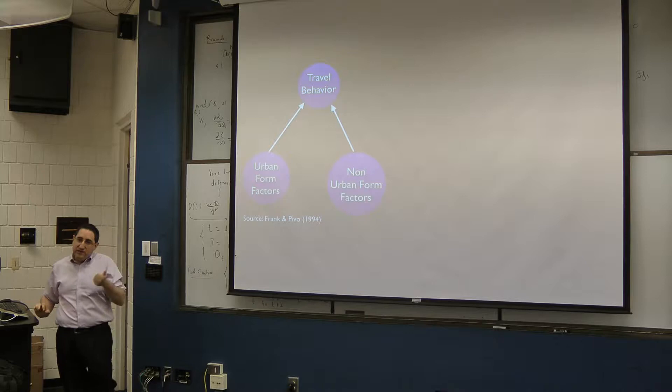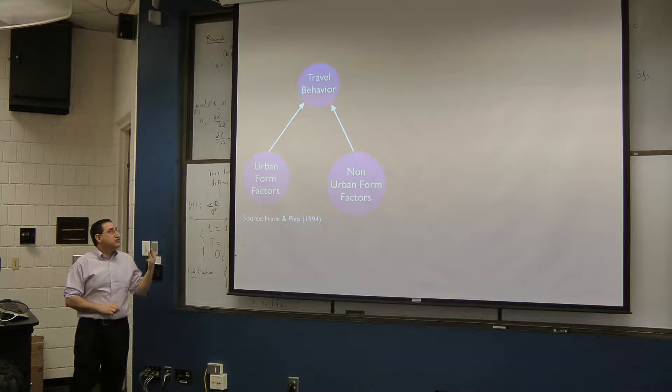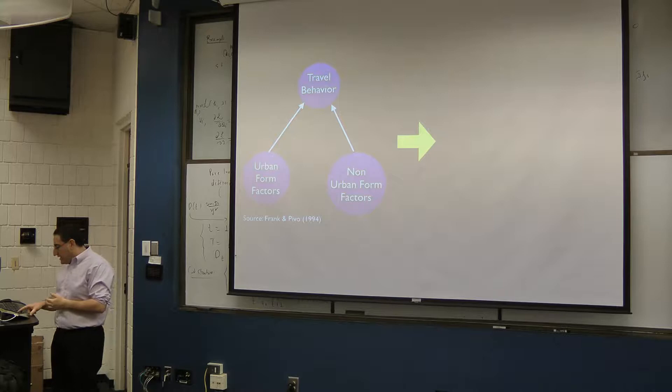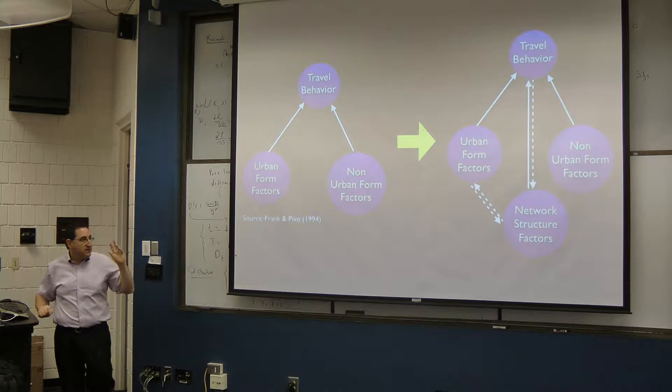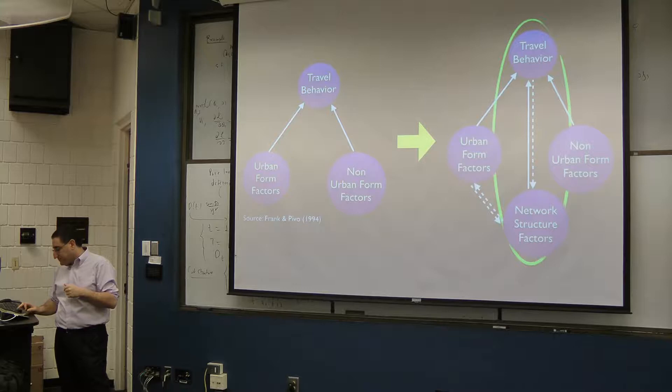Classically, we have this relationship with travel behavior — the decisions people make about how many trips to make, where to go, what mode to take, which route to take. These are affected by things related to urban form, however you define it, and things not related to urban form, like demographics and socioeconomics. We're going to add a set of network structure factors to this analysis. Network structure affects urban form, and it also affects travel behavior directly.